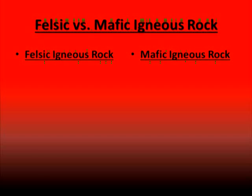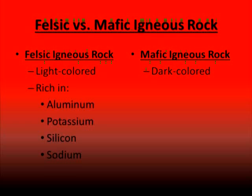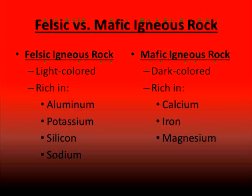With felsic igneous rock, the first thing we're going to notice is they're going to be generally lighter in color, as opposed to mafic igneous rock, which are going to be darker in color. Felsic igneous rock is going to be rich in aluminum, potassium, silicon, and sodium. Whereas mafic igneous rocks are going to be rich in things like calcium, iron, and magnesium.